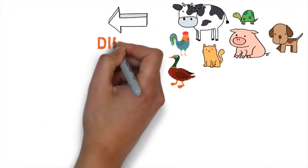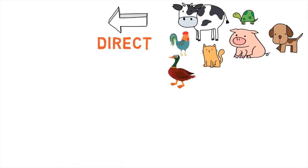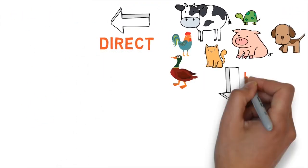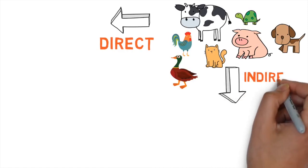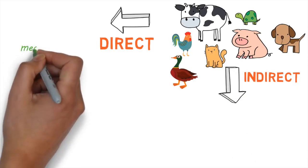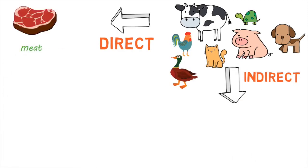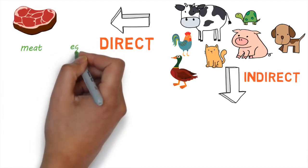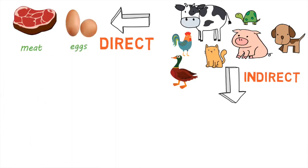From these sources, the bacteria can spread to humans either directly or indirectly. For example, it can spread to people directly when they eat contaminated meat or animal products like eggs that are not cooked properly. Eggs, in fact, are a very common cause of Salmonella outbreaks.